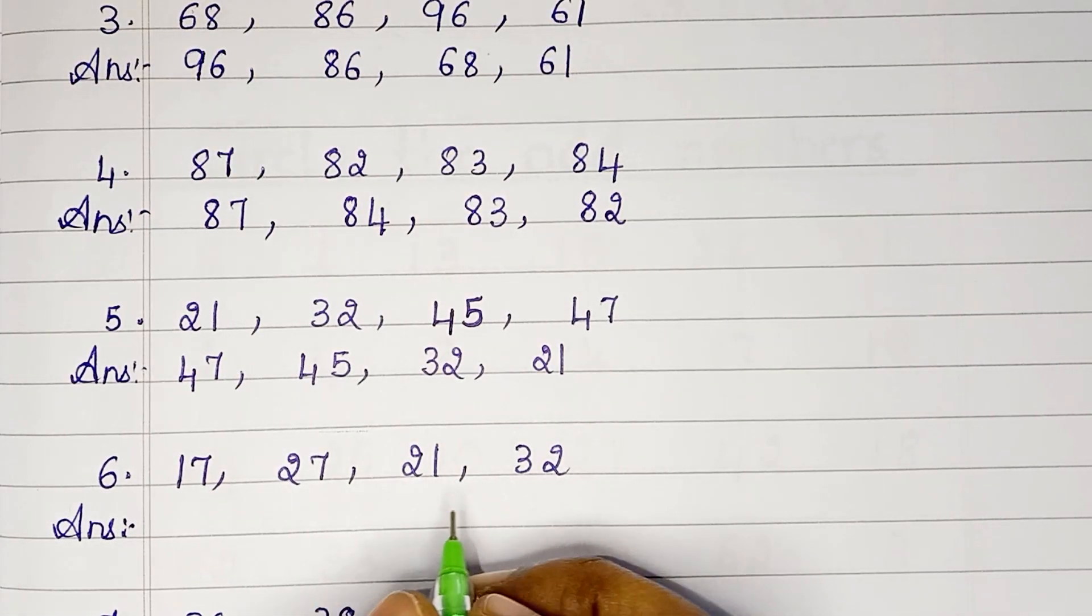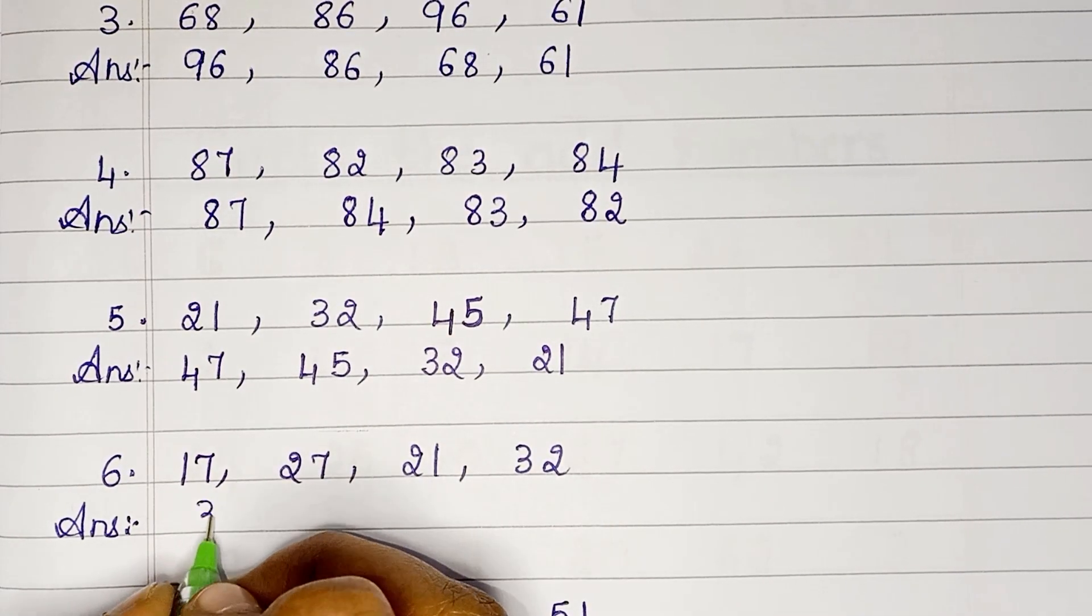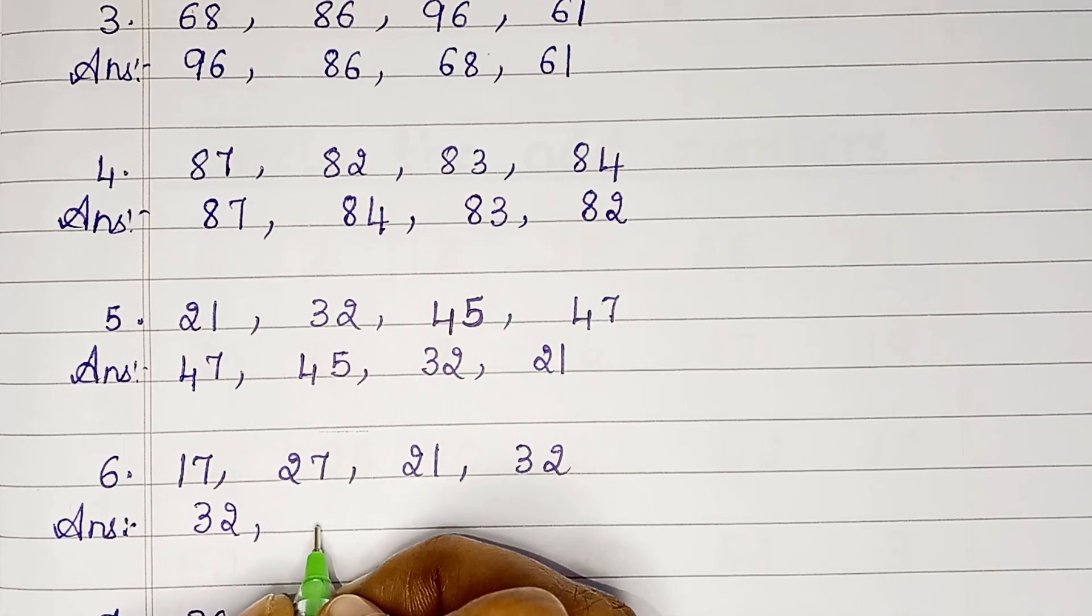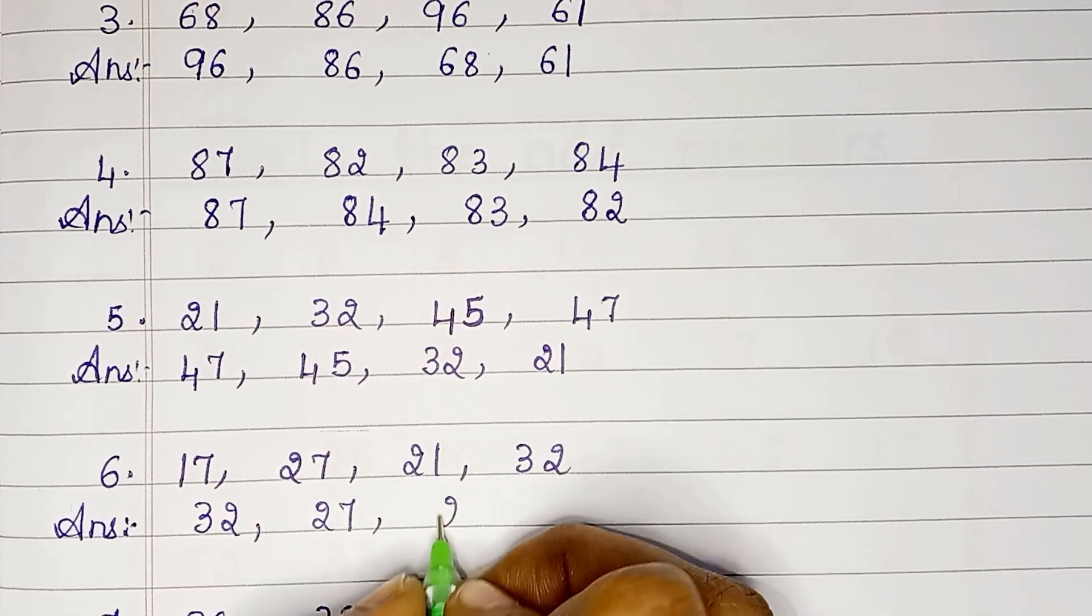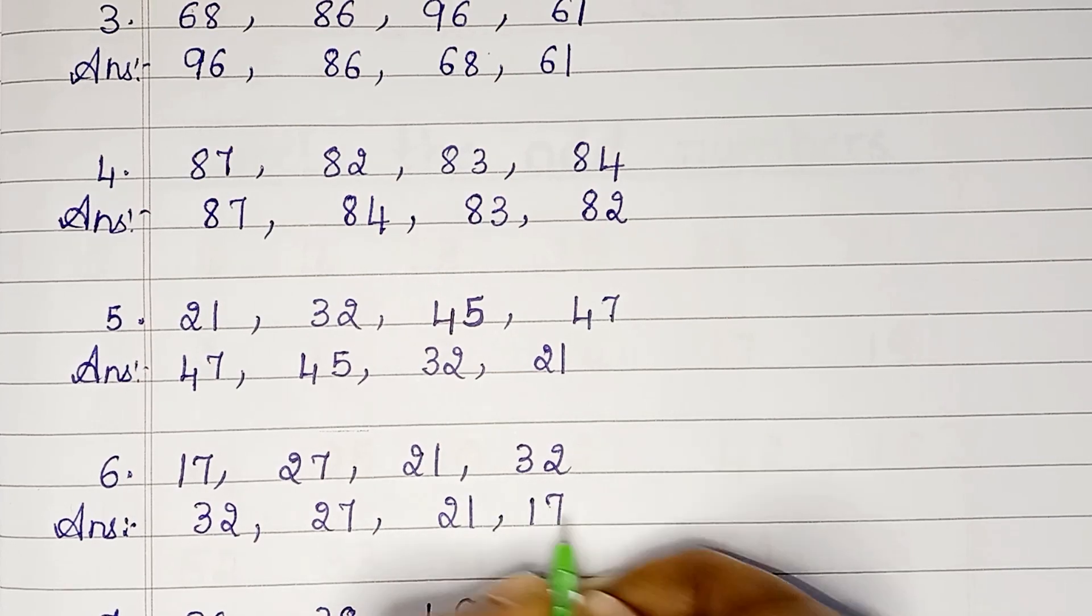Next: 17, 27, 21, 32. In descending order: 32, 27, 21, 17.